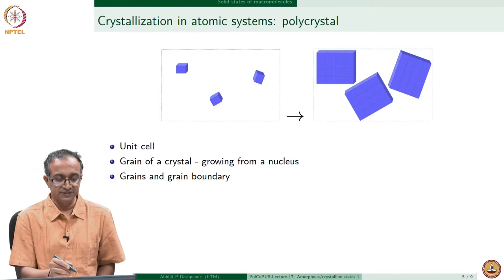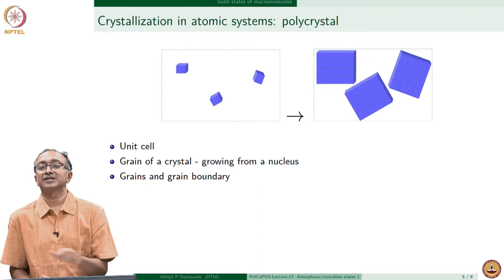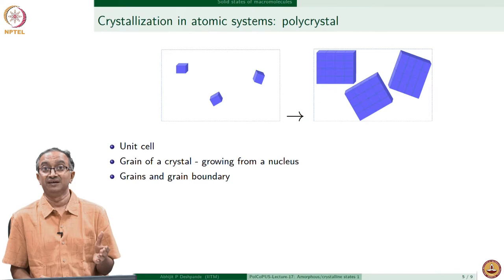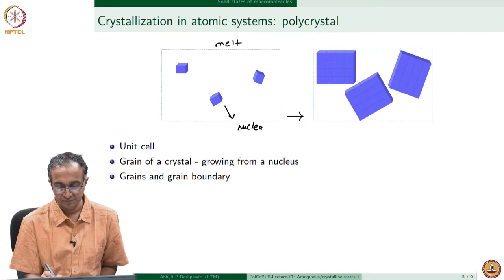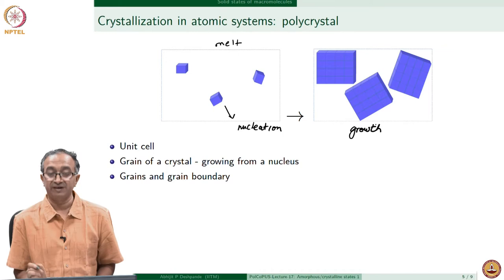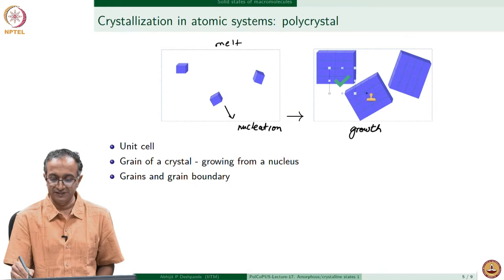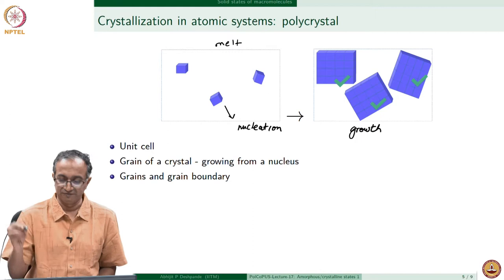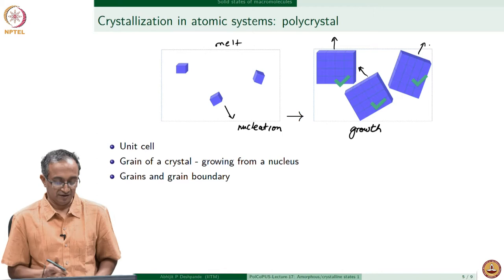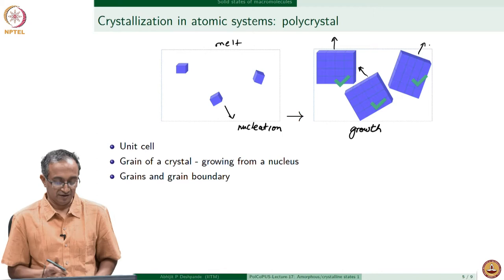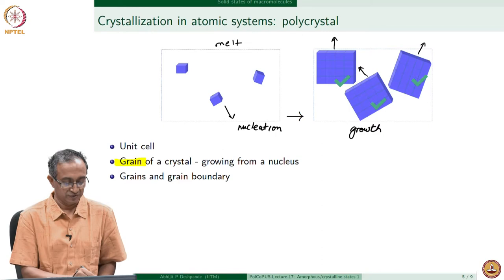Summarizing what happens during crystallization: when starting from a melt, nucleation happens at a few places, and then growth of these crystals takes place. The unit cell is the same in all cases, but its orientation differs between different growing fronts. In the end, all these growth fronts come together — each is called a grain — and bulk crystalline material has grains and grain boundaries. If we prevent nucleation or cool so fast that growth is not possible, we end up with an amorphous or disordered solid. Very fast cooling is called quenching; if we melt the material and quench it, we obtain an amorphous material.